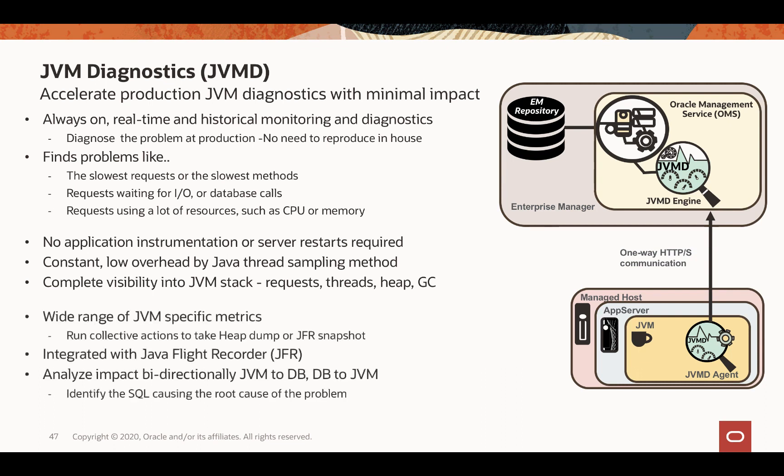JVMD has its own metric management capabilities — you can set up JVM-specific metrics and configure a corrective action to take a heap dump upon metric violation. It has integration with Java Flight Recorder (JFR), allowing you to start JFR snapshot recordings from EM or configure automatic snapshots at threshold violations, and export snapshots for analysis in Java Mission Control. JVMD also integrates with Enterprise Manager's database performance capabilities, so when you find a JVM thread waiting for database, you can drill down to find the specific SQL causing the issue.